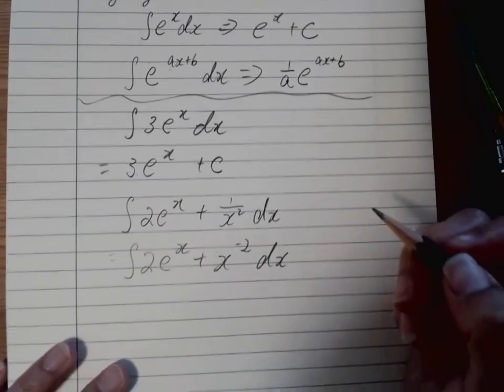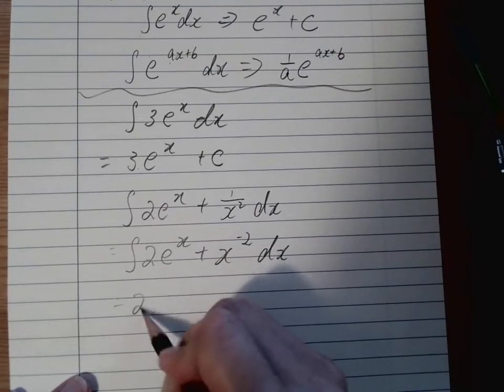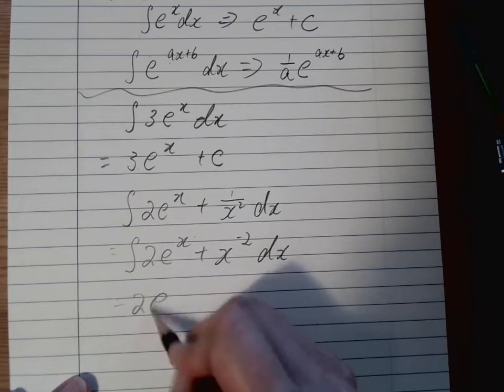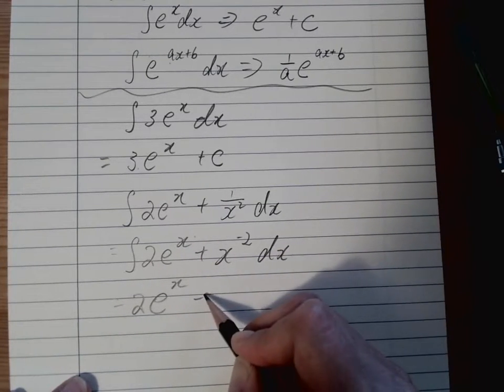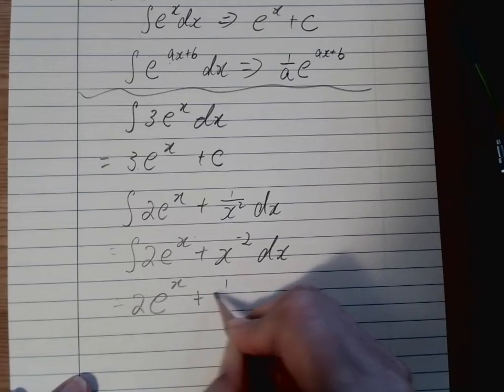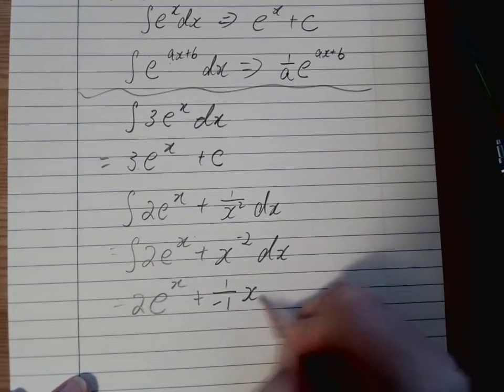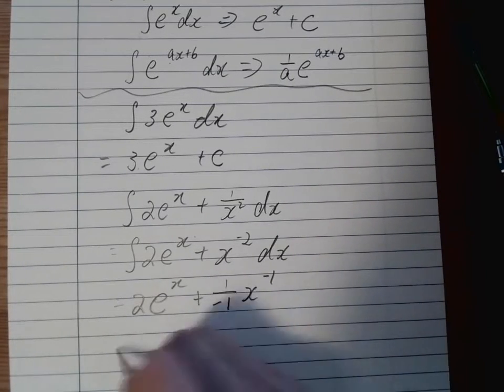Now we can do whatever we like, so the constant stays there. And then we have e^x plus 1 over negative 1 x to the negative 1, plus c.